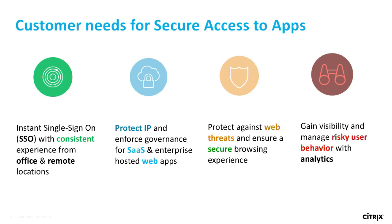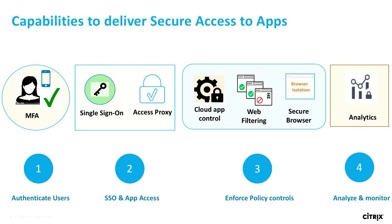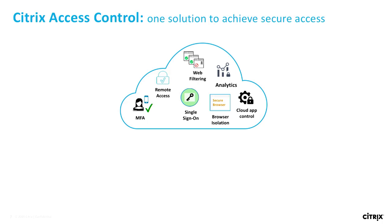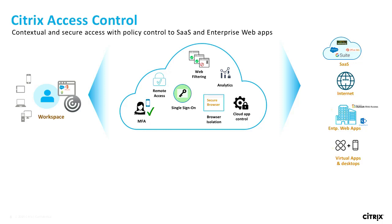Those are the four broad areas customers have been telling us about. That maps to four critical capabilities surrounding authentication, being able to do secure access and single sign-on, enforcing policy control, and bringing analytics to help with the overall solution. That's what access control is all about — it's a cloud-based service. We integrate all these capabilities into one holistic solution, whether you're delivering SaaS applications, web applications hosted as enterprise apps, or users going to the internet for sanctioned or unsanctioned content.